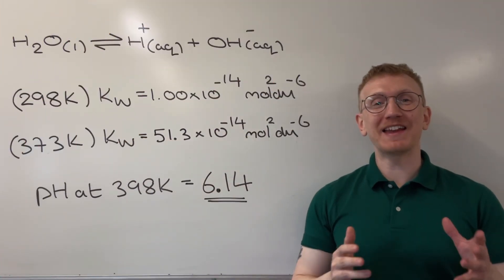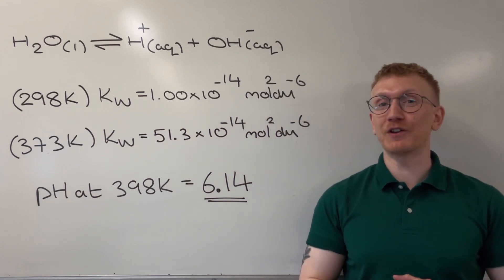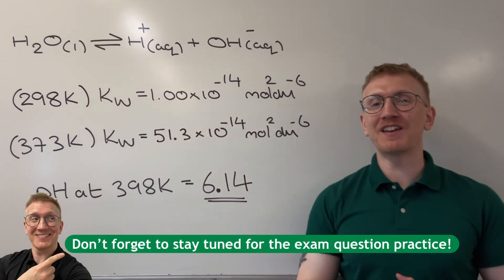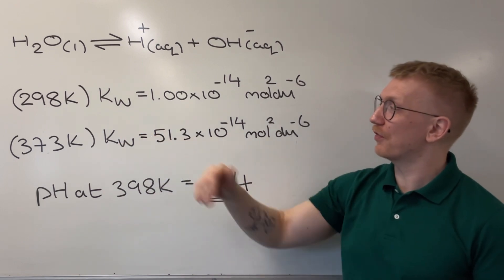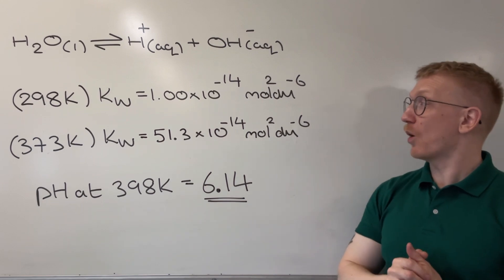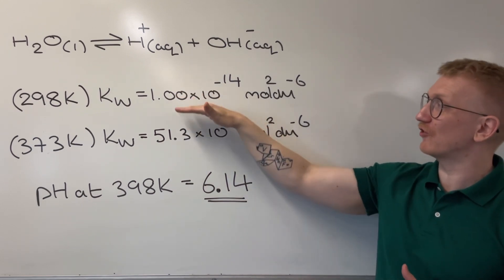Next up, we're going to take a look at how KW varies with temperature. I've got two different KW values for you here at two different temperatures. I've got the regular one at 298 Kelvin, which is 1 times 10 to the power of minus 14. And then I've got this one at 100 degrees C, that's 373 Kelvin, which is 51.3 times 10 to the power of minus 14. Look at that change. The KW value has increased.